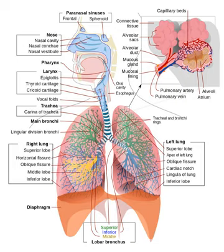Ventilation of the lungs in mammals occurs via the respiratory centers in the medulla oblongata and the pons of the brainstem. These areas form a series of neural pathways which receive information about the partial pressures of oxygen and carbon dioxide in the arterial blood. This information determines the average rate of ventilation of the alveoli of the lungs, to keep these pressures constant. The respiratory center acts via motor nerves which activate the diaphragm and other muscles of respiration. The breathing rate increases when the partial pressure of carbon dioxide in the blood increases. This is detected by central blood gas chemoreceptors on the anterior surface of the medulla oblongata.